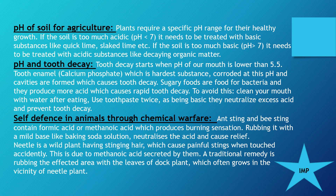A very interesting use of pH is in chemical warfare. When ants or bees sting us, we feel a burning sensation because they release formic acid (methanoic acid) into our skin. Rubbing the affected area with a mild base like baking soda neutralizes the acid and we feel relieved. Similarly, there is a wild plant called the nettle plant with stinging hairs that give a painful sting when touched — also due to methanoic acid secreted by them. The traditional remedy is the leaves of the dock plant nearby, which are basic in nature. Rubbing those leaves on the affected area provides relief.